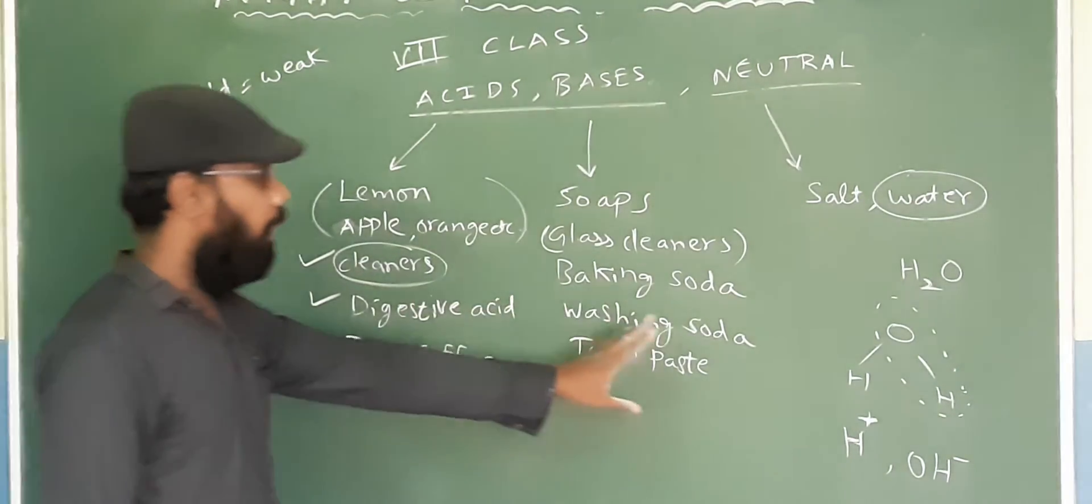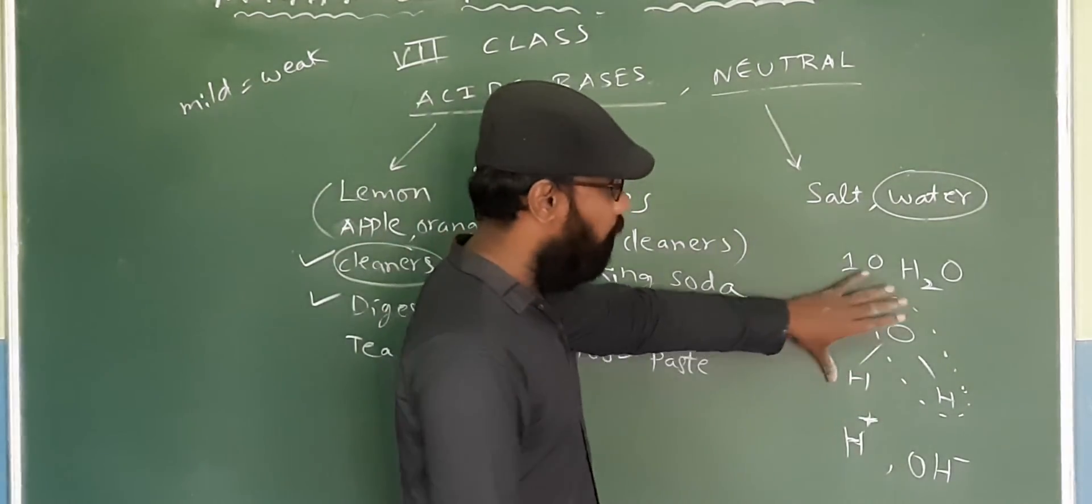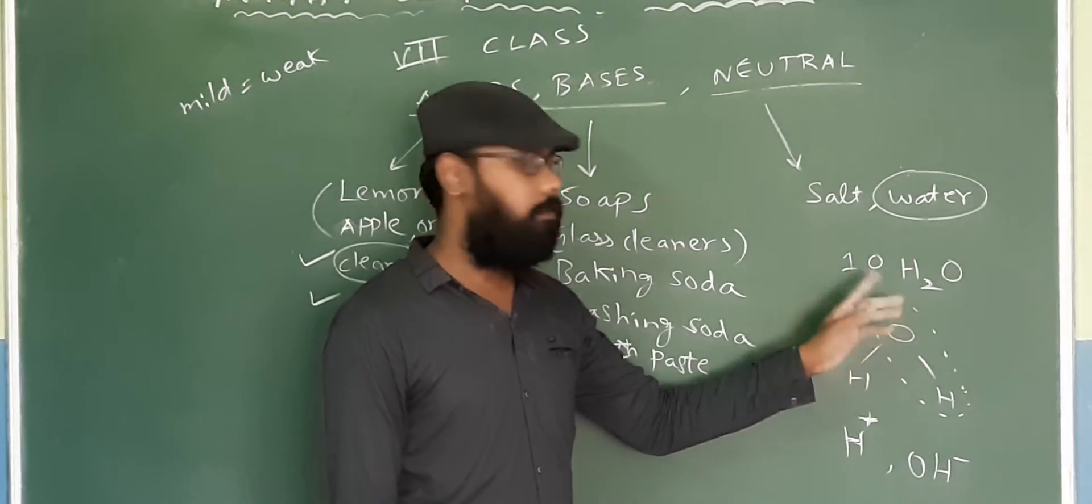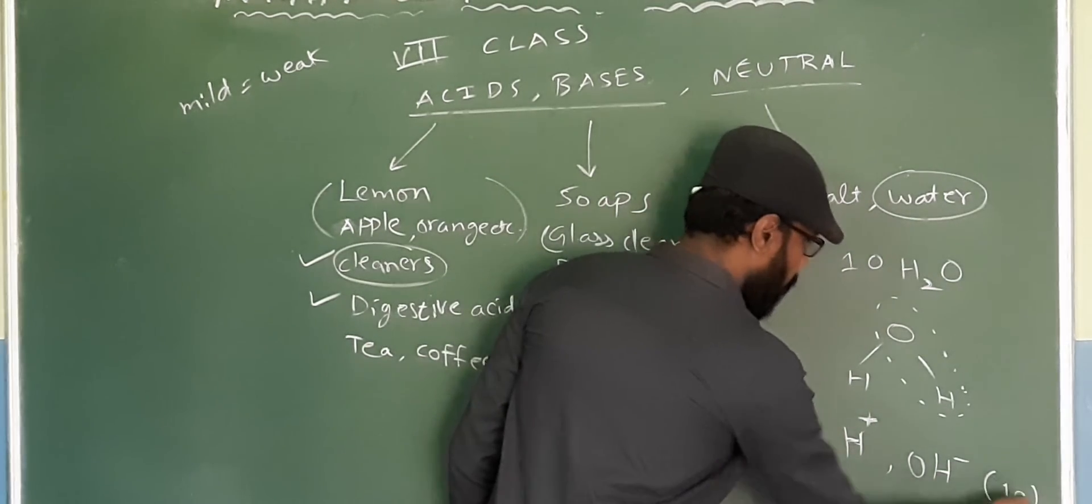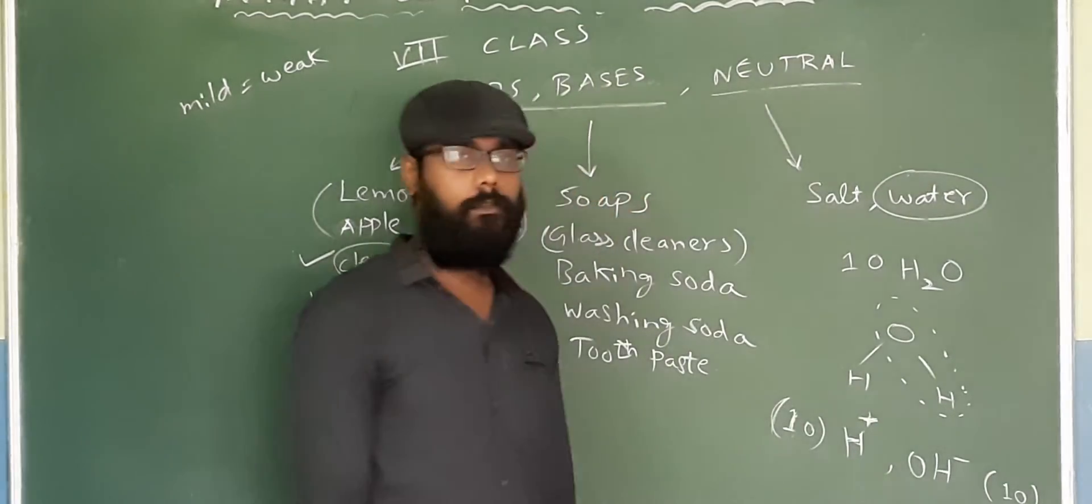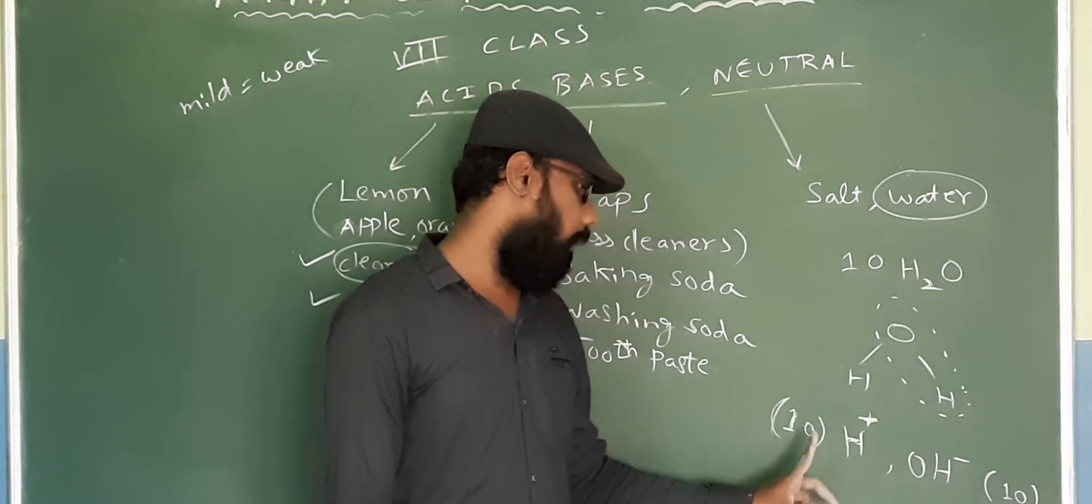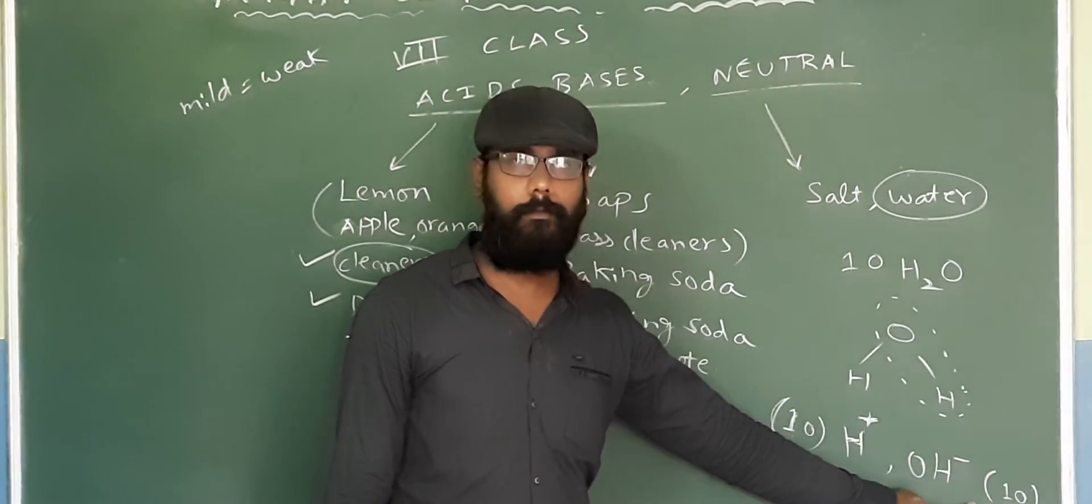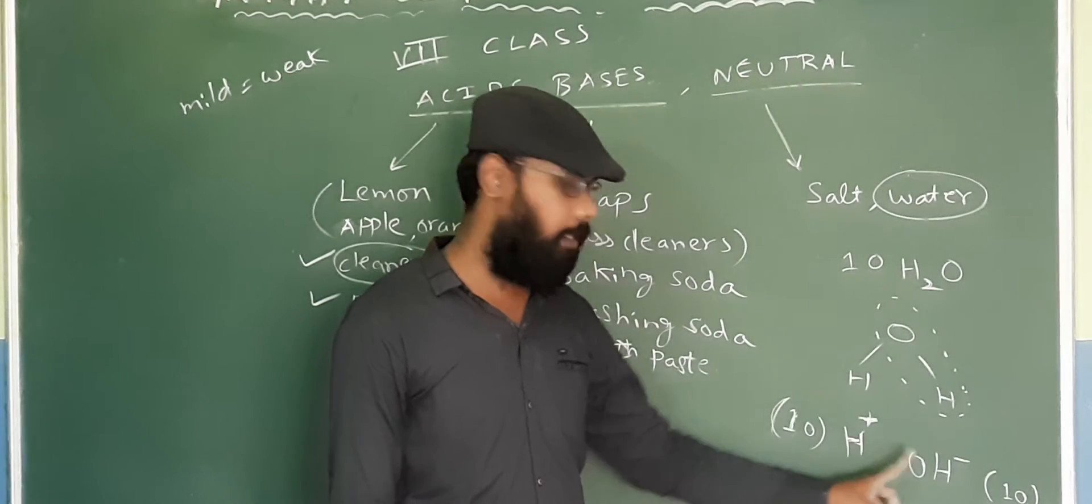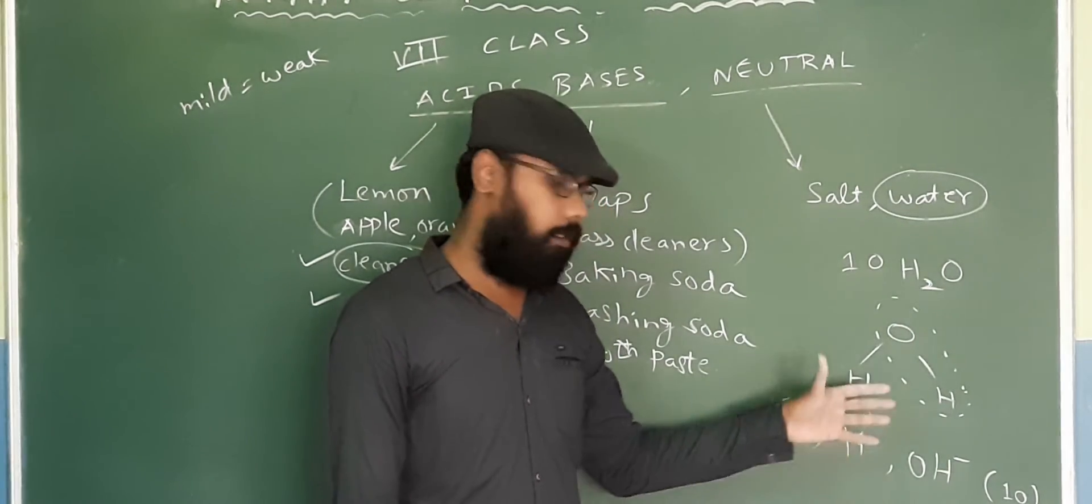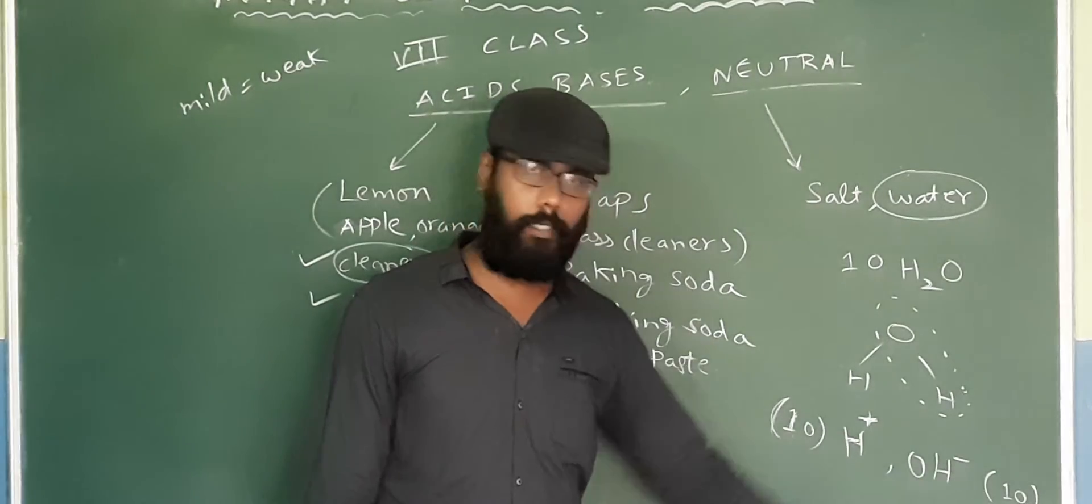Suppose if I have 10 molecules of water, that means I have 10 H2O. If I break these, I will get 10 H+ and 10 OH-. So if 10 water molecules are broken, we get 10 H+ and 10 OH-. Observe that the number of H+ is equal to the number of OH-.